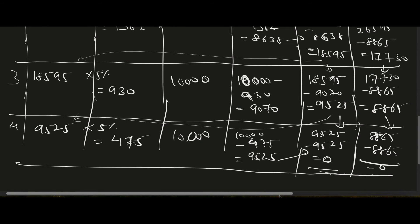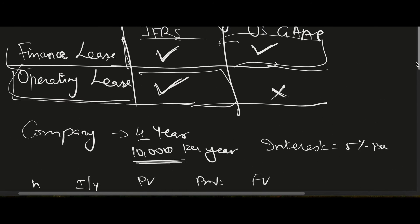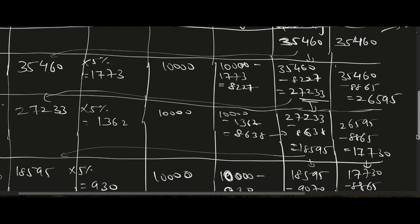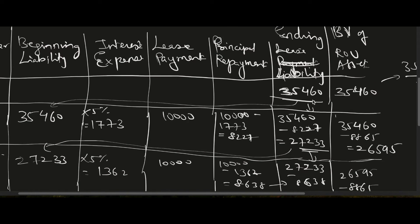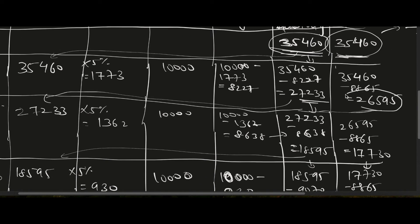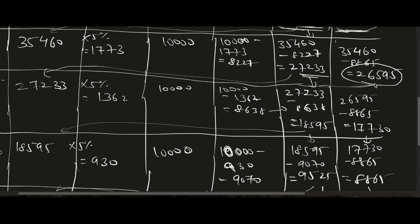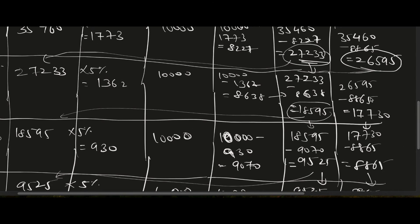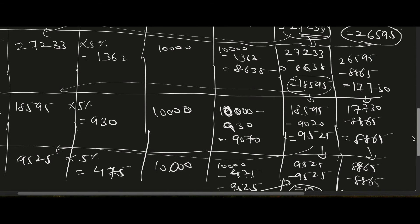This is how lessee accounting is done under IFRS — whether finance lease or operating lease — and under US GAAP for finance lease. Notice that initially the liability and asset are equal, but after that the asset decreases faster because straight-line depreciation reduces it more quickly than the liability is paid down.